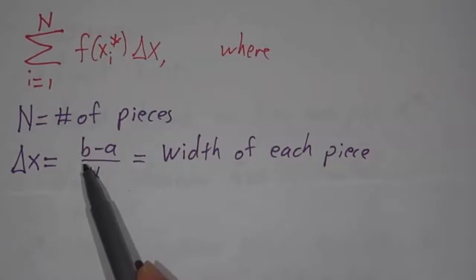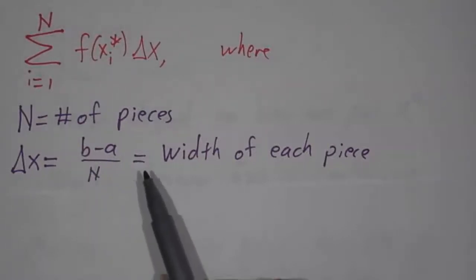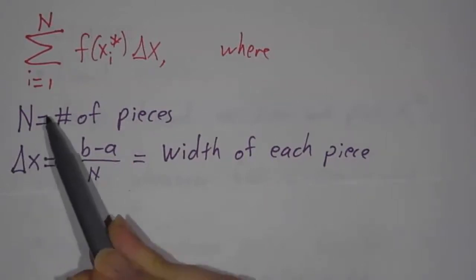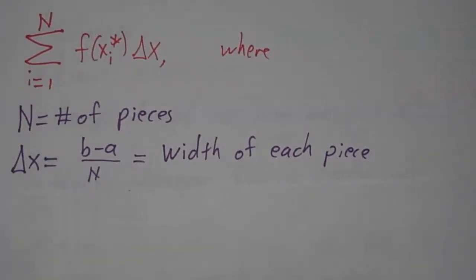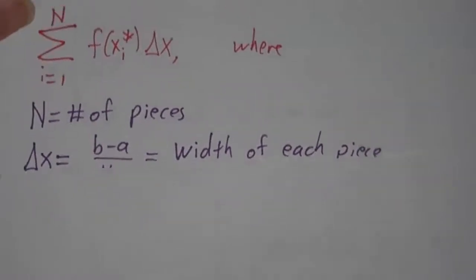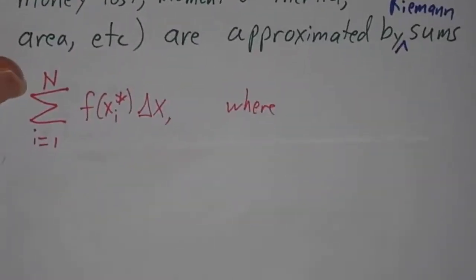We usually take the pieces to all be the same size, so if we're going from a to b, then the width of each piece is b minus a over n, and we call that delta x, and capital N is the number of pieces, and then f is something that's telling you how much we get per unit width.